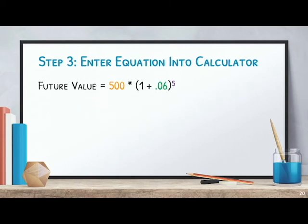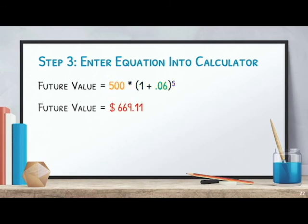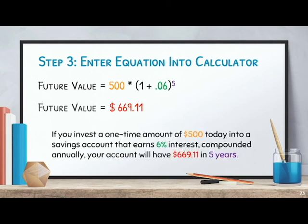The last step is simply entering that equation into a calculator. Rather than solving this by hand, most people have access to a calculator or an online calculator — just plug in the right side of the equation with the numbers. Once you do, you're going to get $669.11. That means if you invest $500 today in a savings account earning 6% interest compounded annually, then in five years your account will have $669.11.